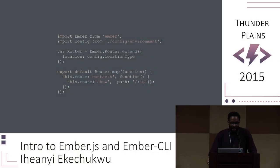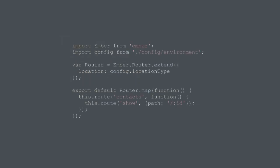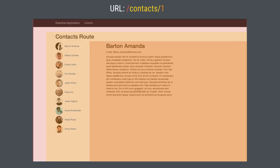This is an example router file for an Ember application. As you can see, the show or detail view for contacts is nested underneath that contacts route. Here's how this route renders out.